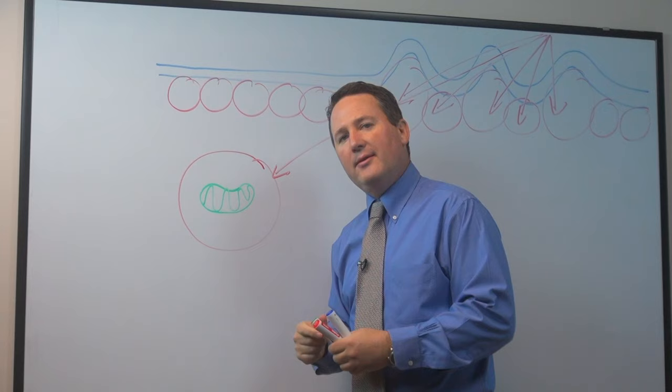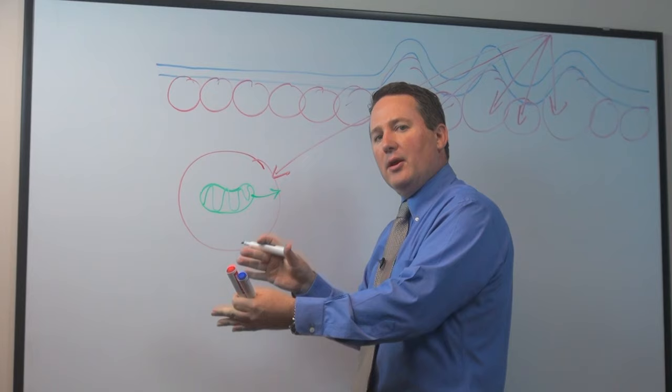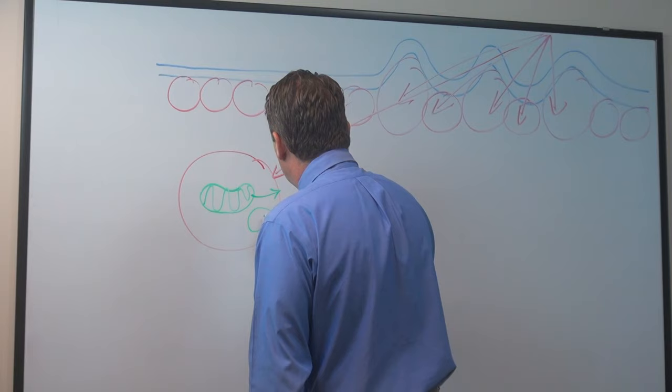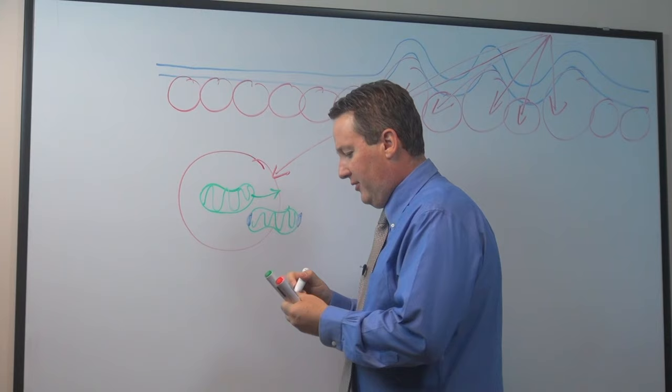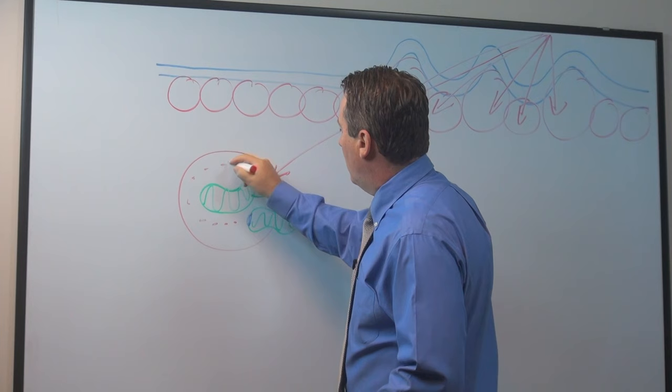As the laser hits that fat cell, it stimulates the mitochondria and causes it to migrate over to the side of the fat cell and embed itself into the cell wall, the outside cell wall of the fat cell. And then what happens is a pore opens up on the inside of the fat cell and on the outside of the fat cell.